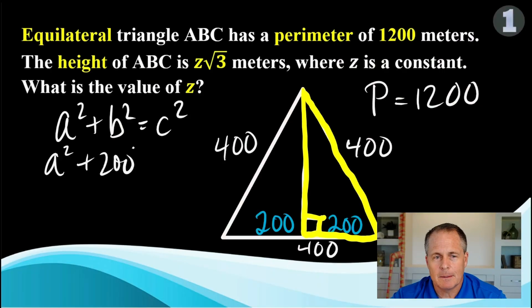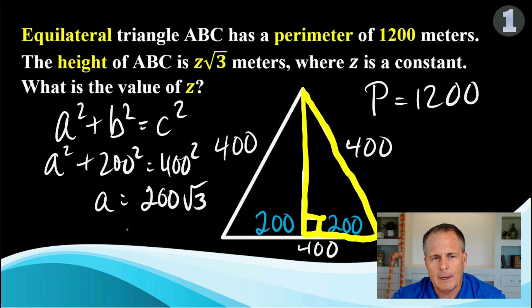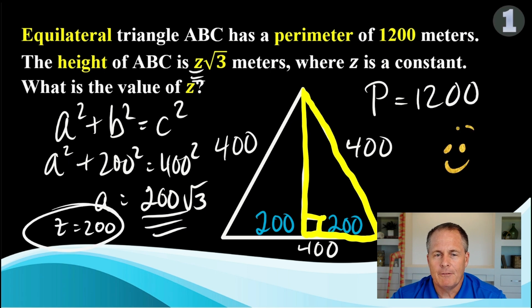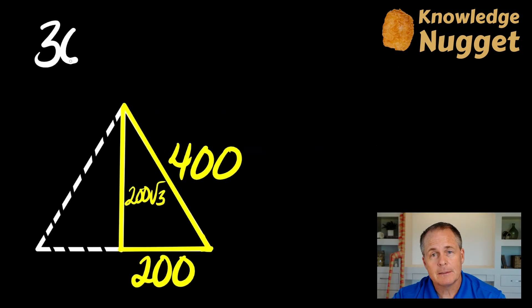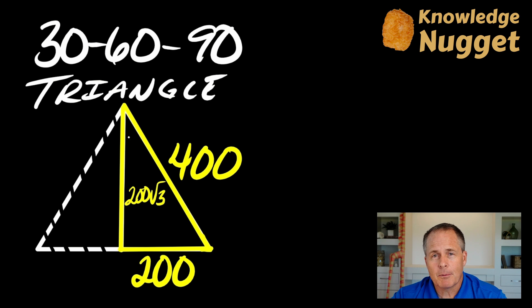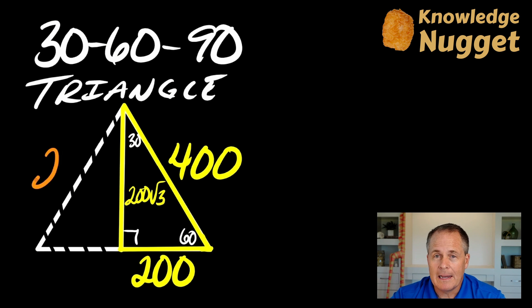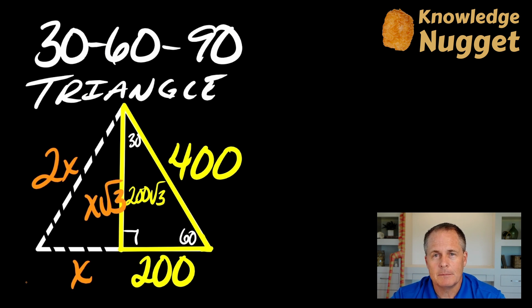Once you use the Pythagorean theorem and some quick maths, it's clear that the height is 200 times the square root of 3. So the final answer is z equals 200. You may have recognized this as a 30-60-90 triangle. And this problem makes it very clear that in a 30-60-90 triangle, the short leg is always one half the hypotenuse, and the medium leg is always the shortest leg times the square root of 3. I must not be a 30-60-90 triangle because I just have two short legs.